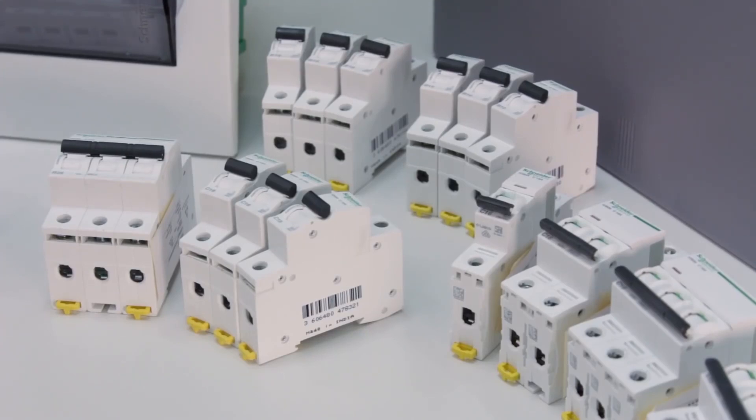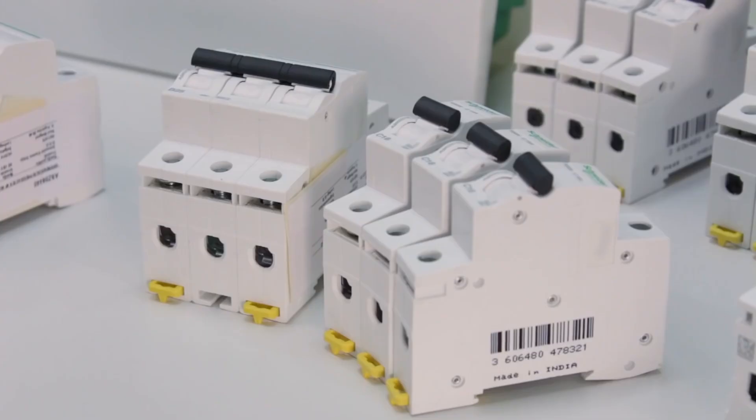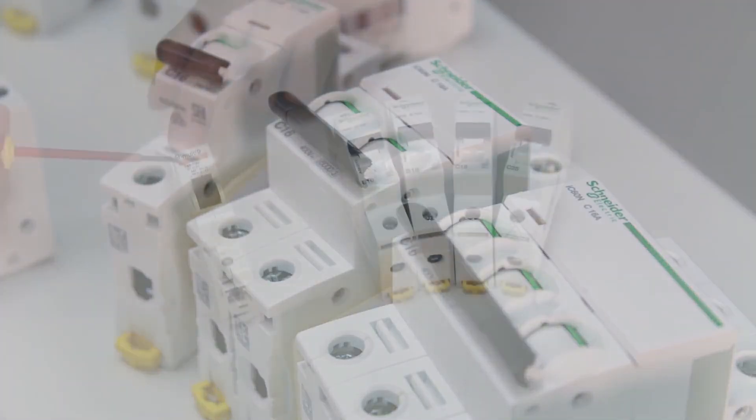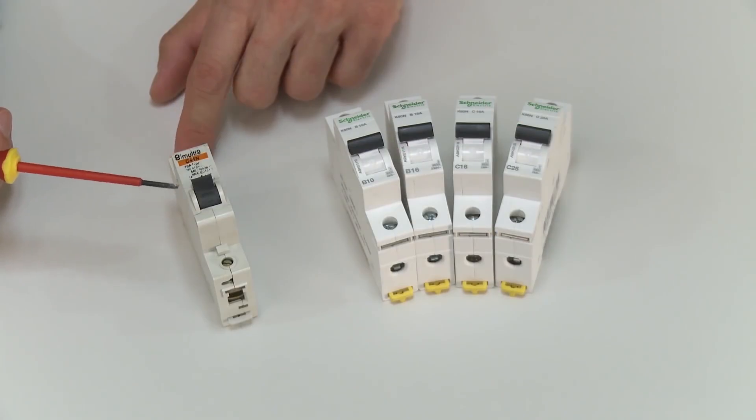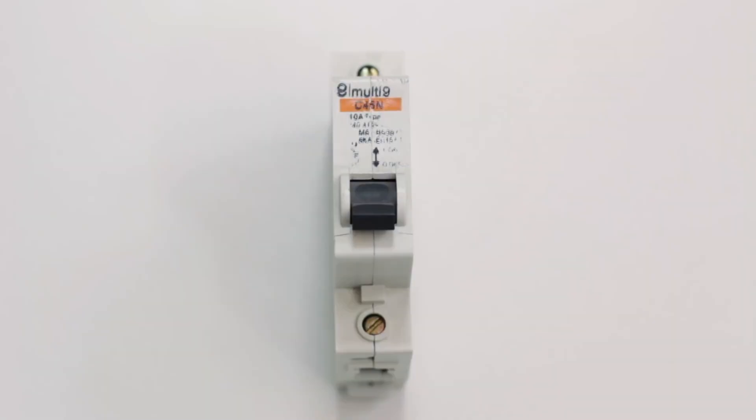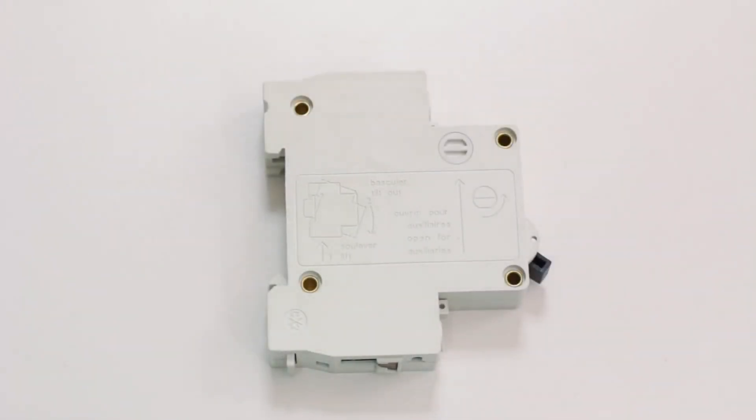When choosing circuit breakers you should pay attention to their reliability or their origin. Here we see an example of a circuit breaker that is obviously a copy and a very bad copy of an original. Be careful because such circuit breakers bring risk to your apartment.